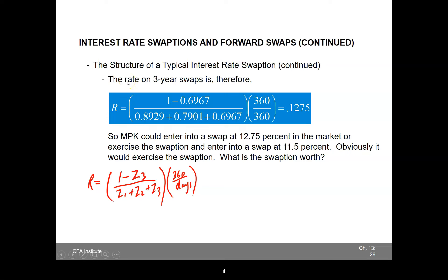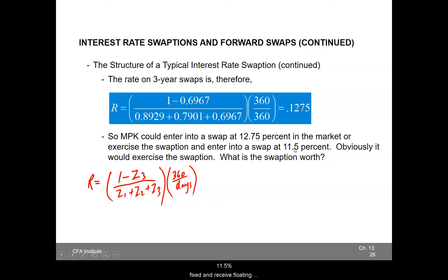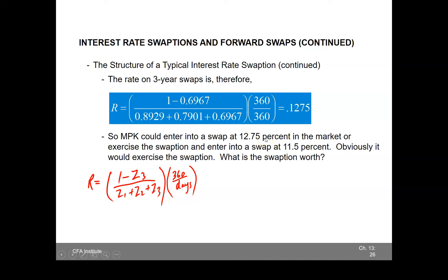If MPK did not have the swaption and wanted to enter into a swap contract as a payer of the fixed rate, it would be required to pay 12.75% as the fixed interest in the swap and would be receiving floating. However, the swaption allows MPK to enter into a swap at 11.5% — paying 11.5% fixed and receiving floating — which is a much better option. So it's obvious that MPK would consider exercising the swaption at expiration, given that the market rate for a 3-year swap at that time will be 12.75%.